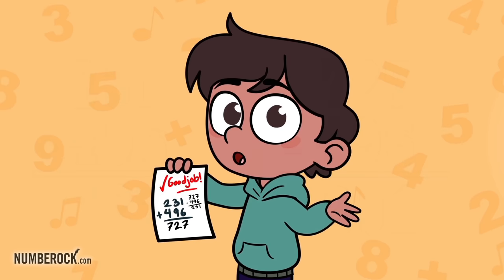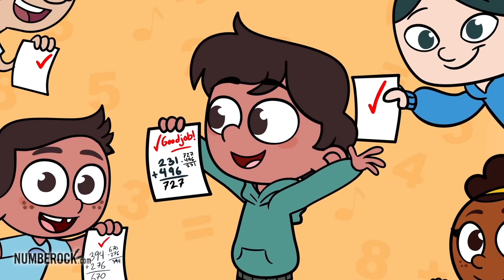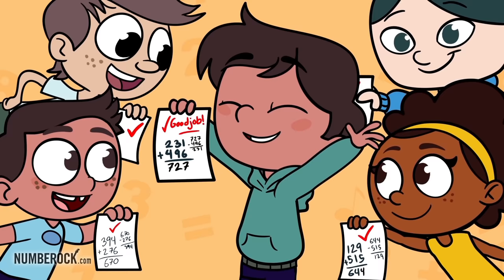addend, your work is done. When presented with a triple digit problem, number rockers always check after we solve.